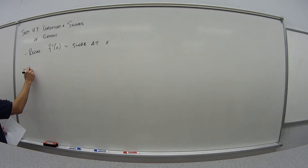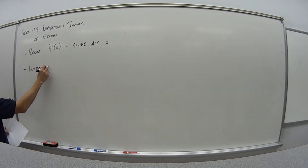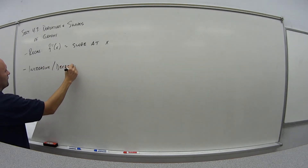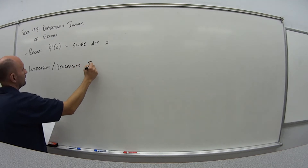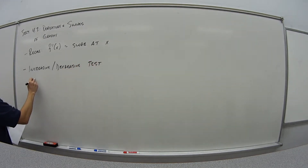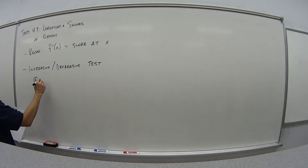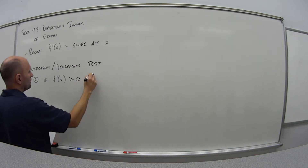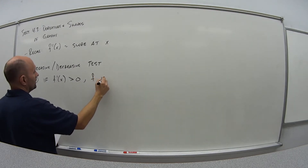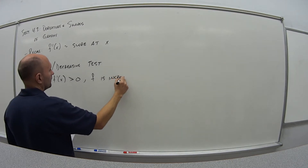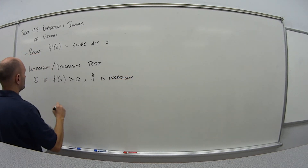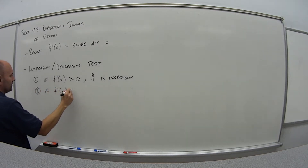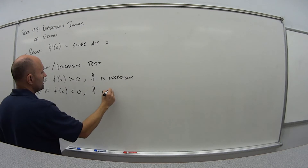So this gives us what's known as the increasing or decreasing test. I have two options. If f prime of x is greater than 0, then f, the function, is increasing. And similarly, if f prime of x is less than 0, then f is decreasing.